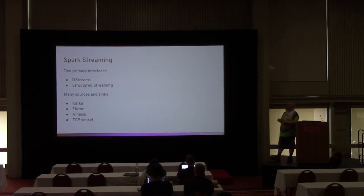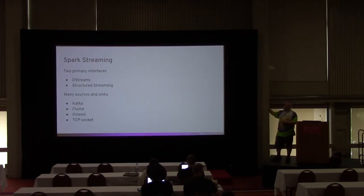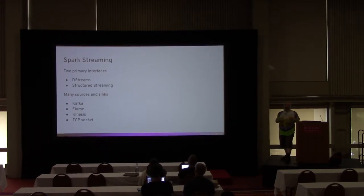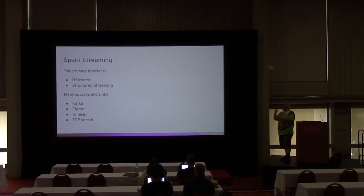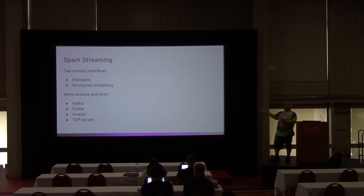Spark streaming has two main interfaces. One is called DStreams — the discretized stream — which is a very low-level interface. The other is structured streaming, a fluent style of programming where you set up a workflow that runs on every piece of information coming through the stream. Although I'll demonstrate Kafka, there are many sources and sinks you can use — Kafka, Flume, Kinesis, or even a raw TCP socket.